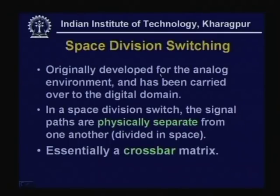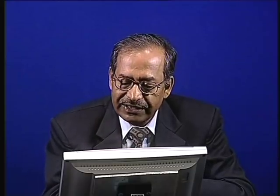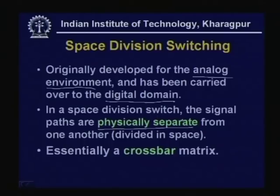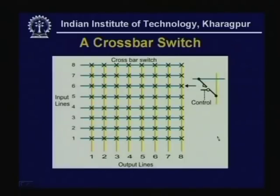Switching can be done in a number of ways. One technique is known as space division switching. This was originally developed for the analog environment — the telephone network was originally used for voice communication — but has subsequently been carried over to the digital domain. In a space division switch, the signal paths are physically separate — physically separate paths are provided for each link. Essentially it is a crossbar matrix.